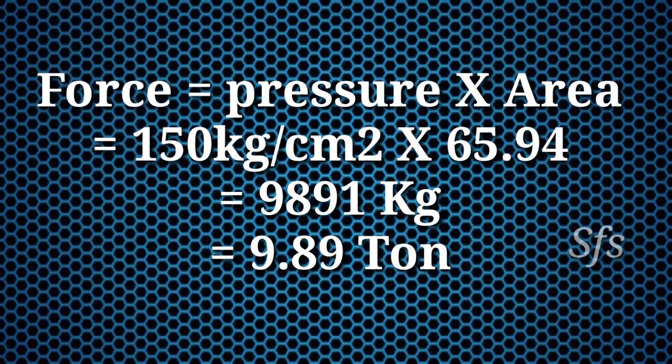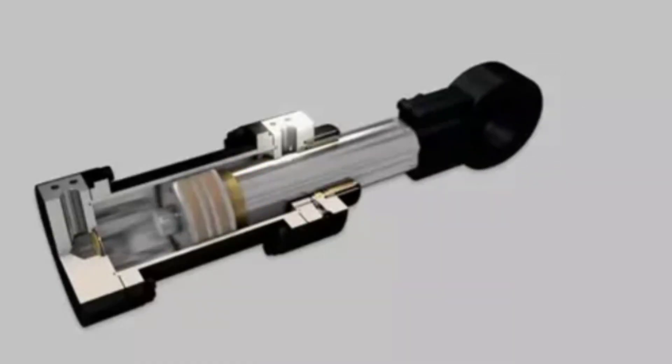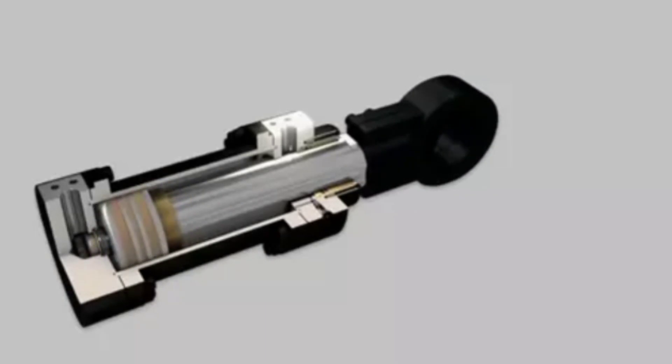In the same working pressure, if we increase the size of our cylinder—meaning increase the diameter of the cylinder—it will produce a large amount of force. If we use a smaller diameter cylinder, it will produce less force because force is directly proportional to pressure and area.